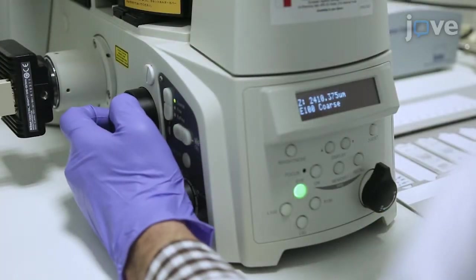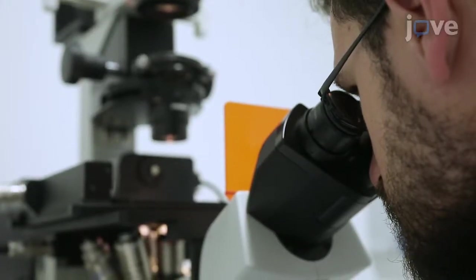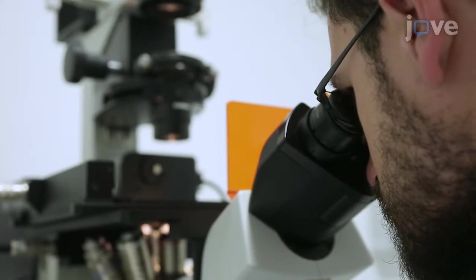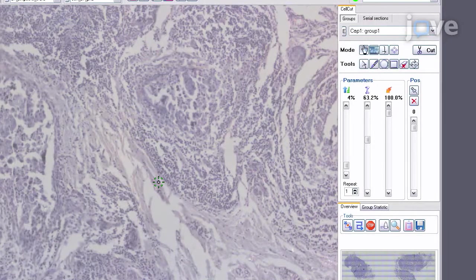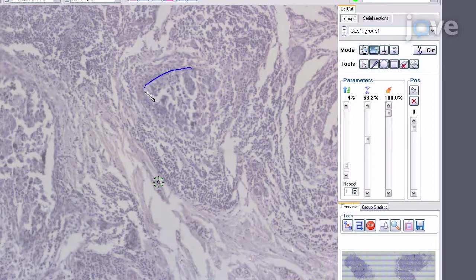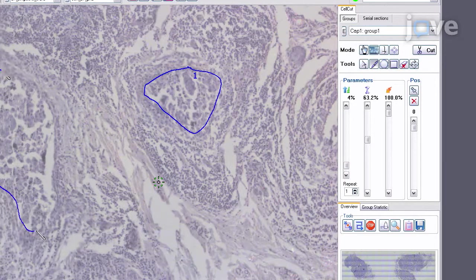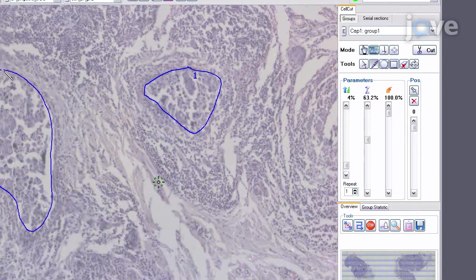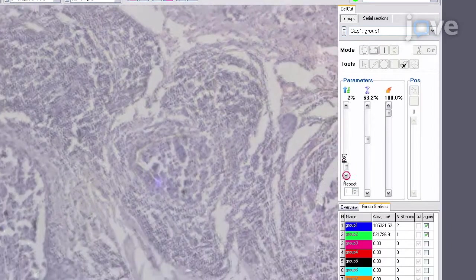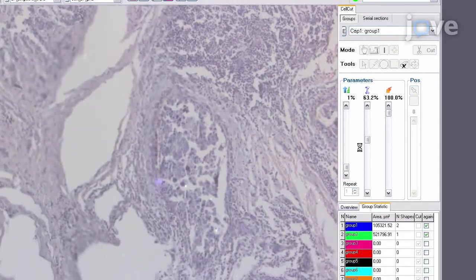Now scan the stained membrane slides using the 4X objective. Select and encircle the target areas for microdissection on the membrane slide. Keep track of the total area. At least 42 square millimeters is needed for adequate downstream RNA analysis. Then initiate the laser cutting at the defined parameters.